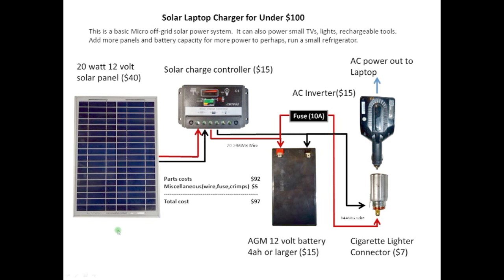Let's talk about these components in more detail. We need a solar panel, a solar charge controller, an AGM battery, some wiring, a cigarette lighter connector, an inverter, and a fuse, which is right here. This is an inline fuse.